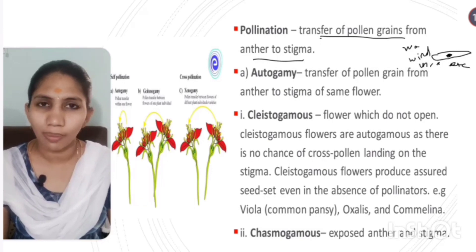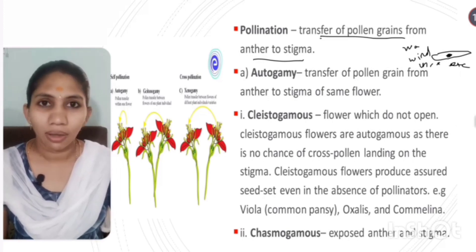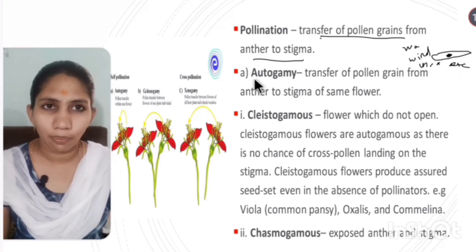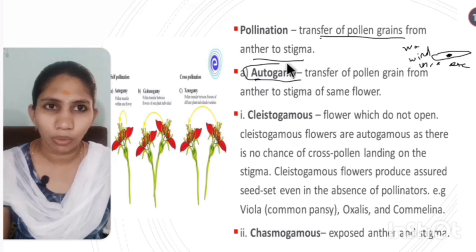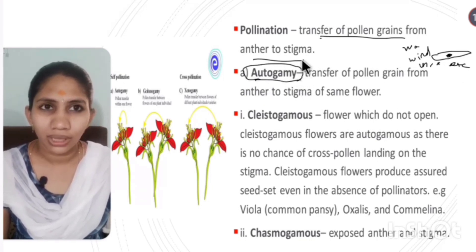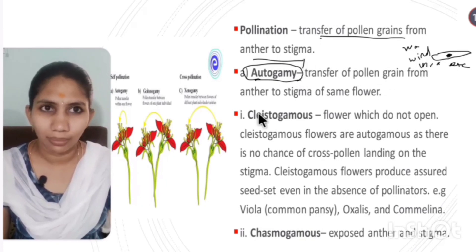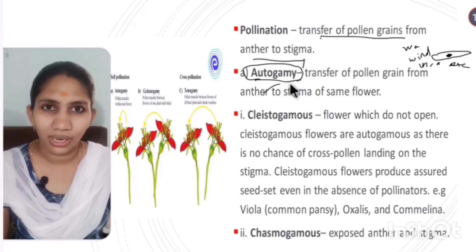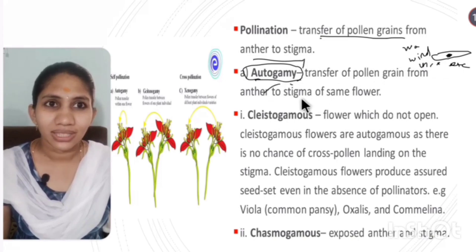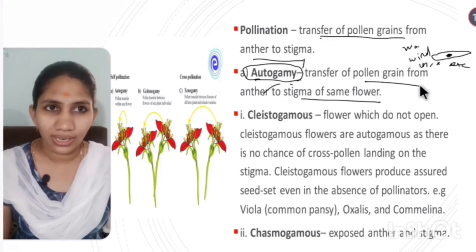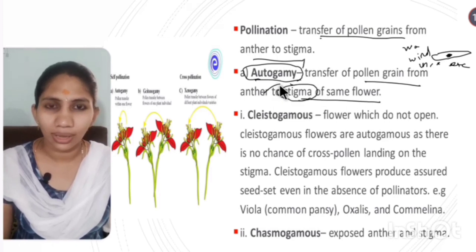Depending on the kinds of pollen grains, pollination is of different types: autogamy, geitonogamy, and xenogamy. Autogamy means pollen grains are attached to the stigma of the same flower.